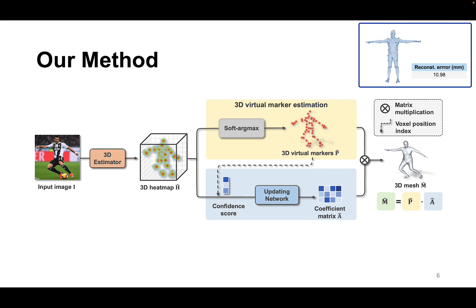Note that this happens frequently. For example, the markers in the back will be occluded when a person is facing the camera. As a result, inaccurate marker positions may bring large errors to the final mesh if we directly multiply them with the fixed matrix.